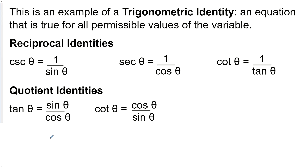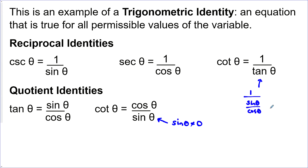Tan theta equals sine theta over cos theta, and cotangent theta equals cos theta over sine theta. In this quotient identity, only sine is in the denominator, so our non-permissible values would come from sine theta cannot equal zero. But if we define cotangent theta as 1 over tan theta, then this is 1 over sine theta over cos theta, so we have sine theta in the denominator and cos theta — neither of them is allowed to be equal to zero. So if we define it this way, we're going to have more non-permissible values than if we define it this way.